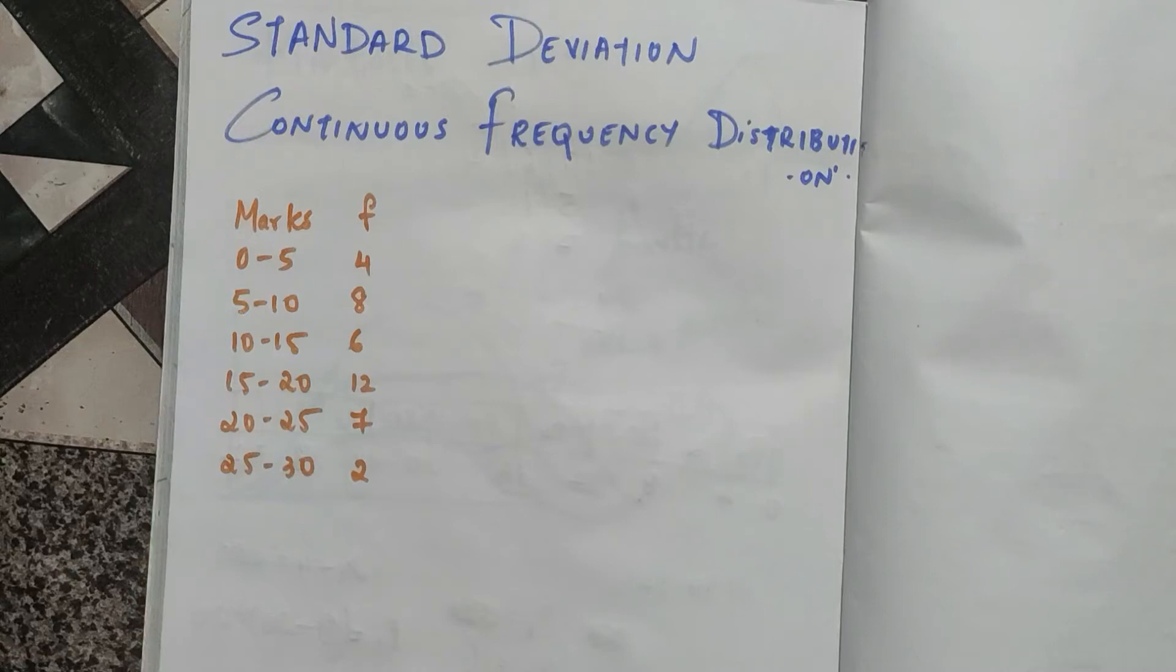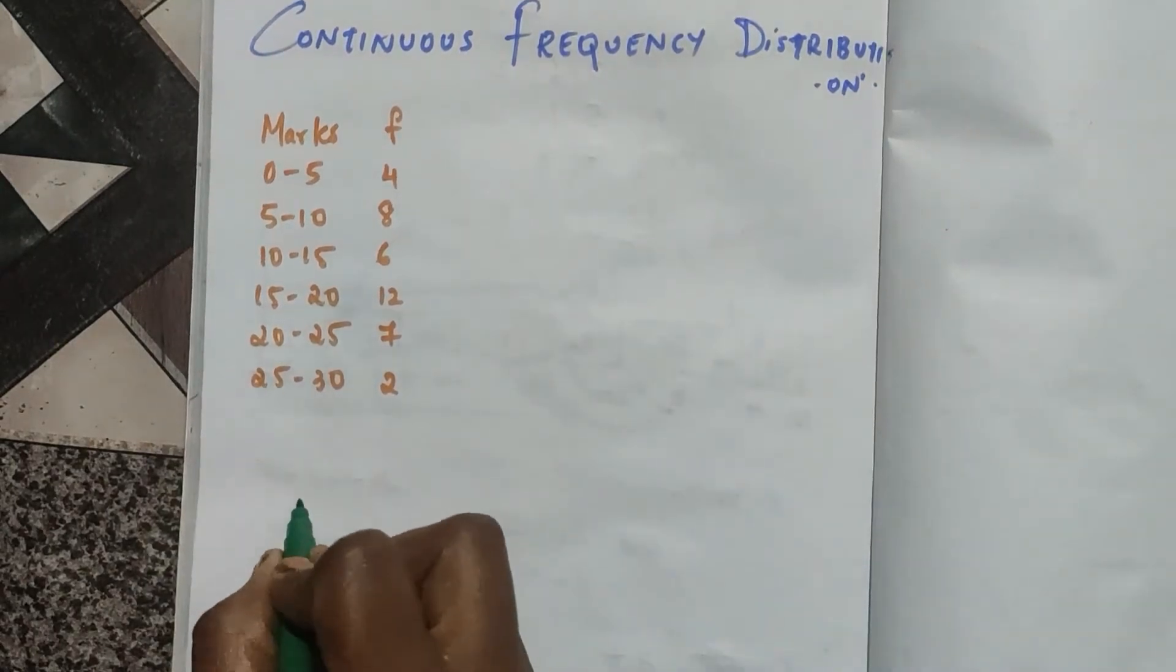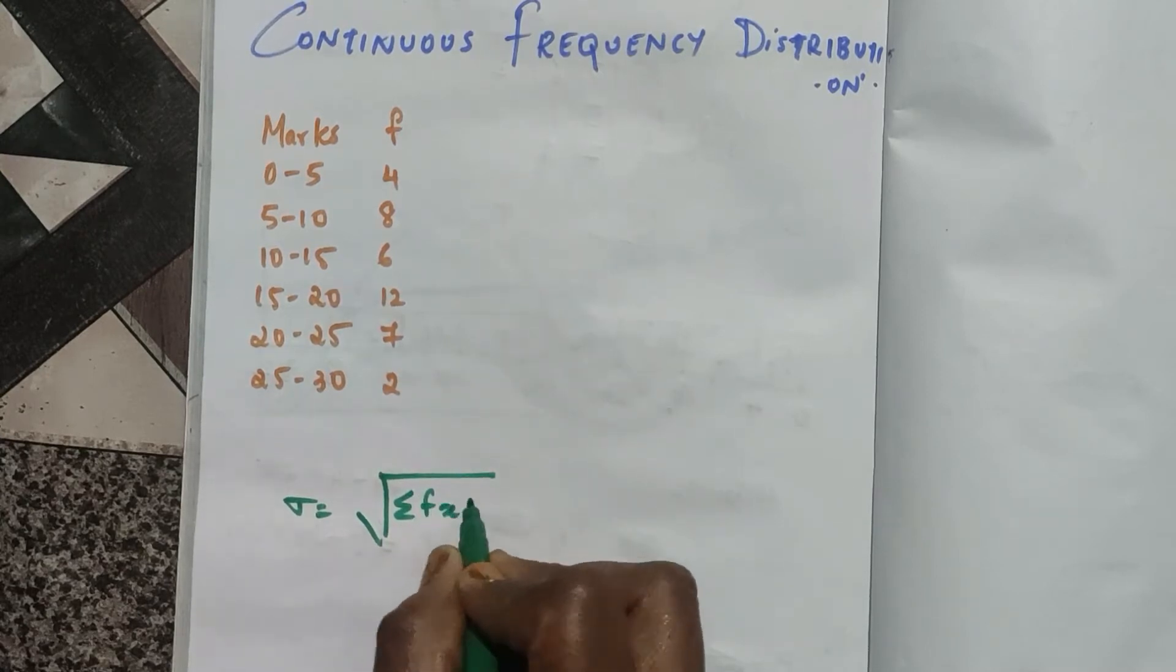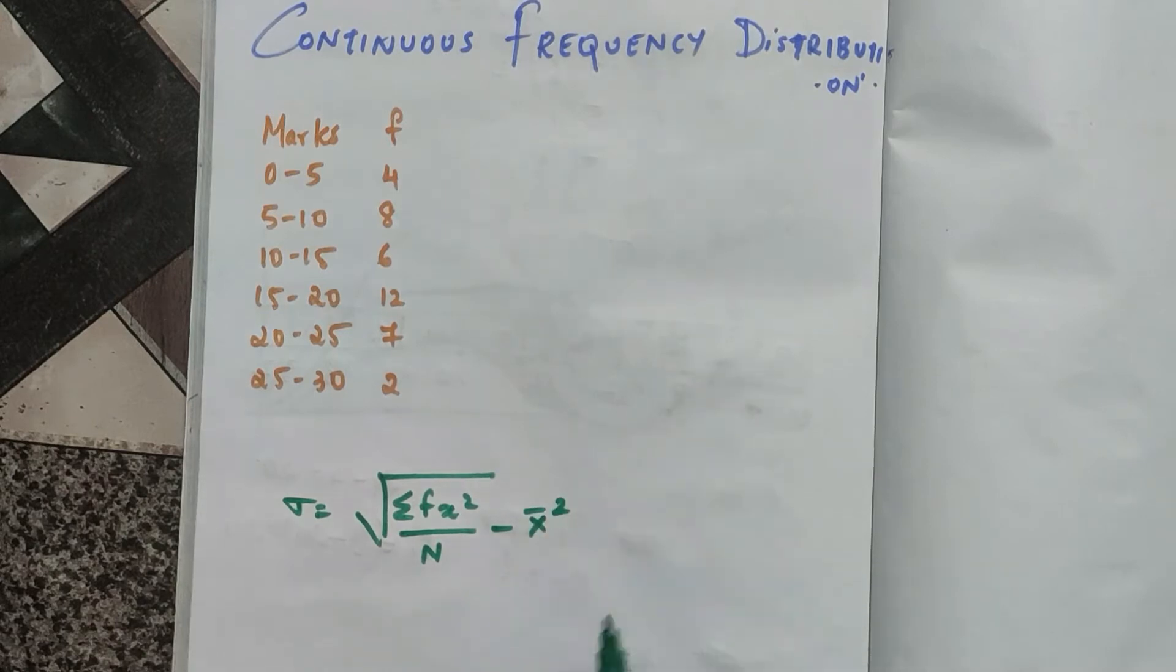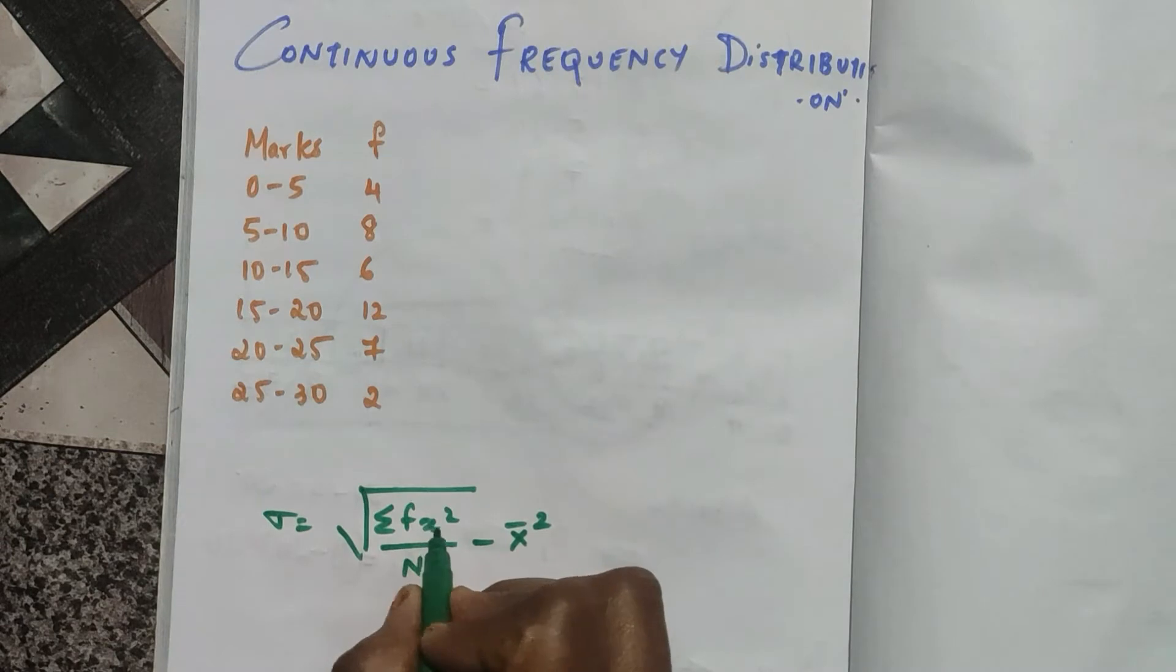Hey guys, in this video we'll be learning about continuous frequency distribution of standard deviation. The formula for continuous frequency distribution in standard deviation is root summation fx square divided by n minus x bar square. Looking at the formula, we need to find out x values first.